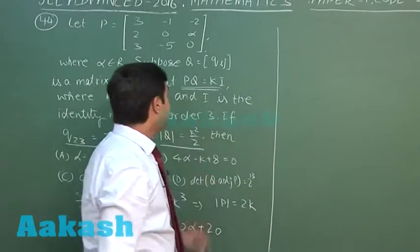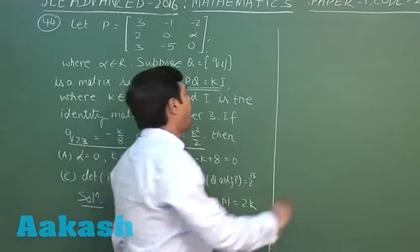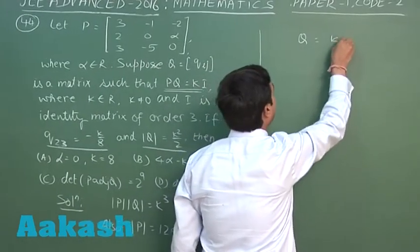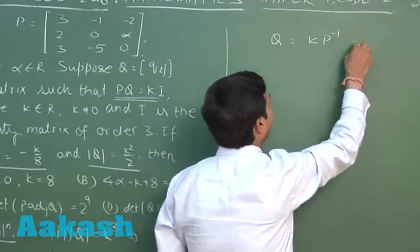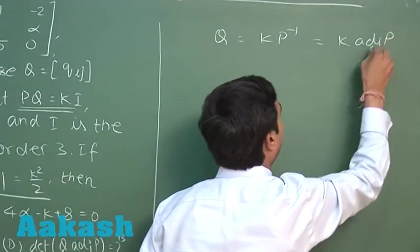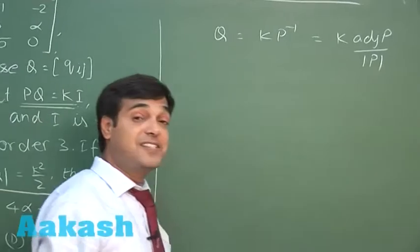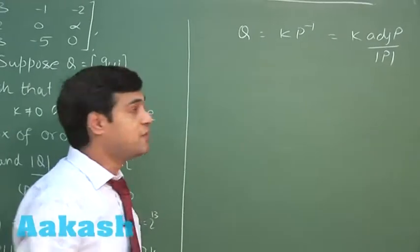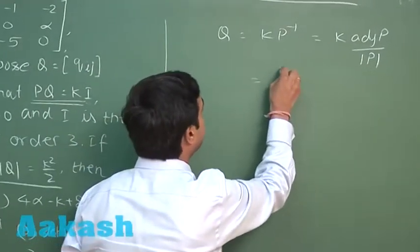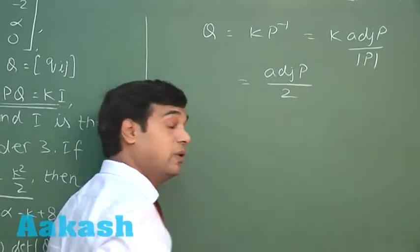Since PQ = kI, we can write Q = k·P⁻¹. And P⁻¹ can be written as adj(P) divided by det(P). Since det(P) = 2k, we have Q equals adj(P) divided by 2.